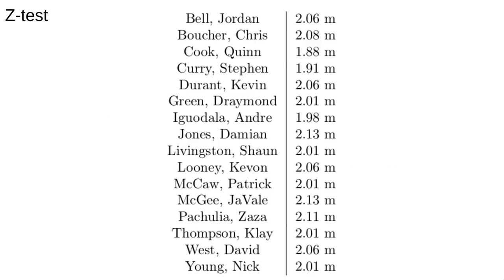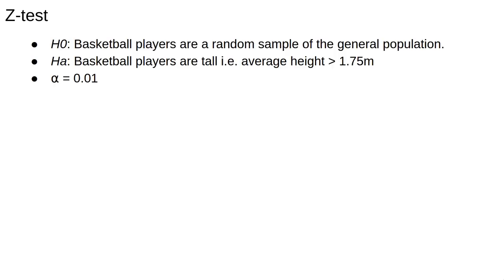Using the z-score, we can do a very simple hypothesis test. Let's try to prove that basketball players are tall. This is the 2017-2018 roster for the Golden State Warriors. I don't follow basketball at all, so I have no idea who they are, but they all seem pretty tall.